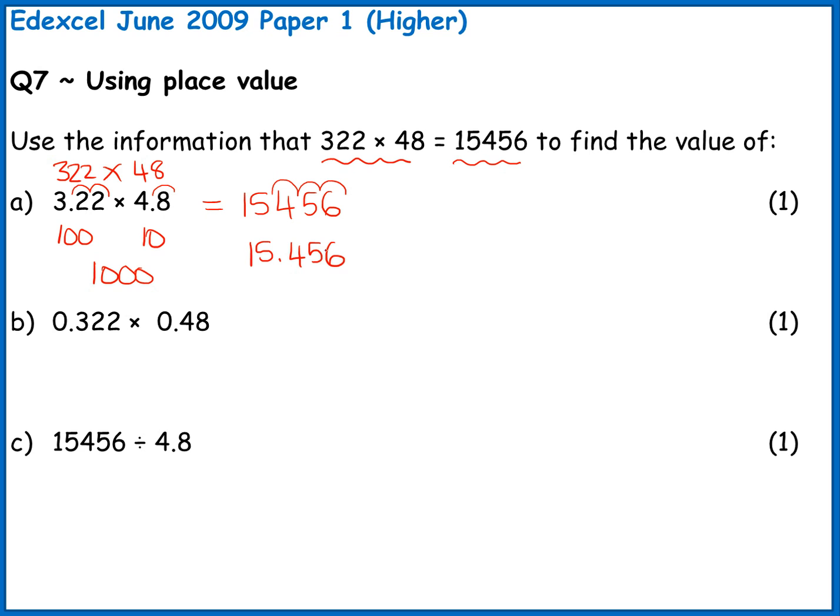Quite a neat little trick you can do for this is by counting decimal places. So I can say I've got three decimal places in my question, two there and one there. So I then have three decimal places in my answer counting from the right.